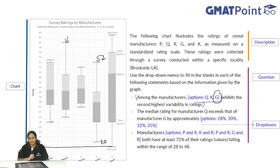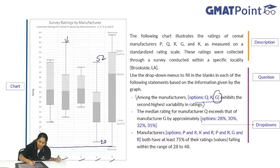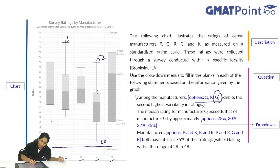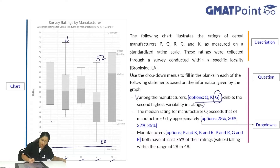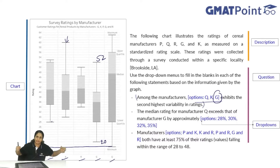G has the second highest variability in ratings. Generally, variance considers the spread from the median — the greater the spread, the higher the variance. Looking at Q, the median, upper quartile, and lower quartile are spread apart. For G, the median and quartiles are closer together, but the min and max tails are very far away. Between K and G, looking at the min-to-max difference, G has the furthest spread. So G is the correct answer for second highest variability.